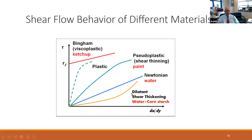Some materials show increasing shear stress resistance as you apply shear rate — these are shear thickening materials, and the classical food science example is cornstarch. Finally, some materials need a finite stress to begin to flow, and beyond that stress they may flow linearly with applied shear rate. The stress needed to initiate flow is called the yield stress, and if the material behaves linearly afterwards the flow behavior is called a Bingham plastic or viscoplastic. Ketchup, tomato paste, and peanut butter are examples.